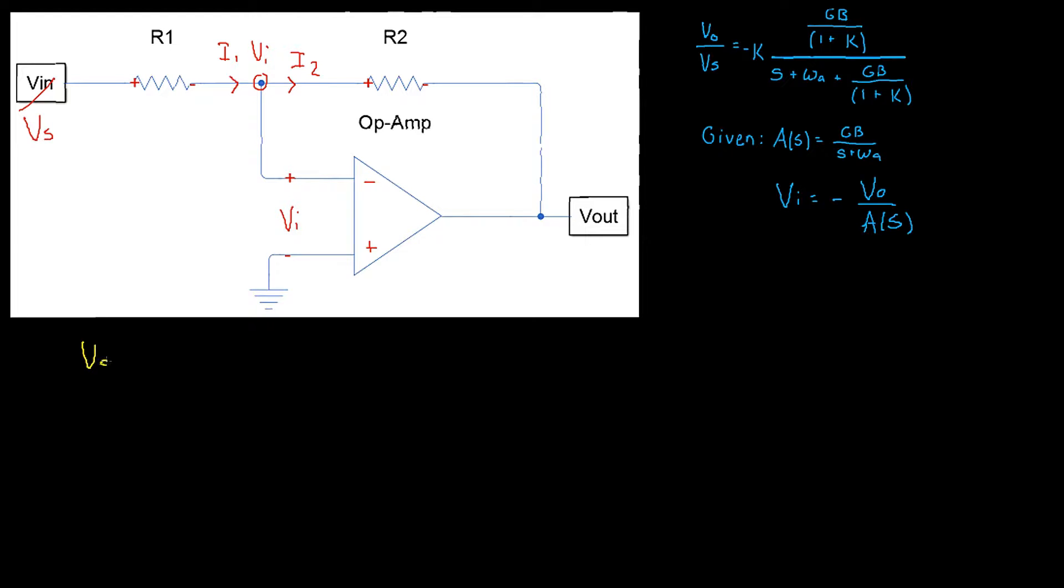I1 equals vs minus vi divided by the resistance traveled through r1, which equals the current leaving i2 which equals vi subtract vout divided by r2. Then let's multiply by r1 r2 to remove those denominators. This gives us vs r2 minus vi r2 which equals vi r1, the r2 cancel, minus vo r1.